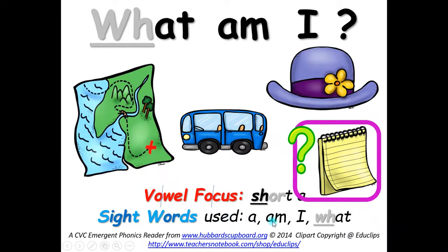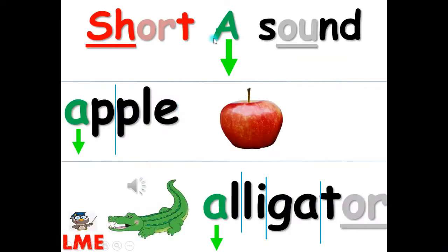Sight words: A, am, I, what. Sight words are commonly used words found in stories and written text. Short A sound — the A goes down. A, A, A. That's the sound for short A.